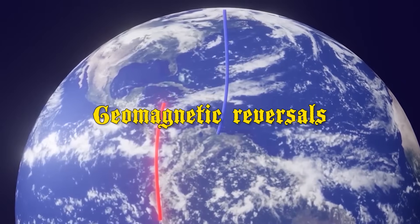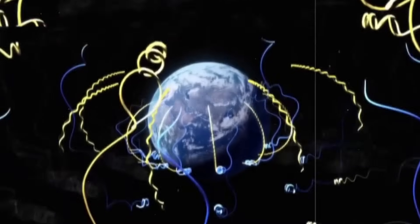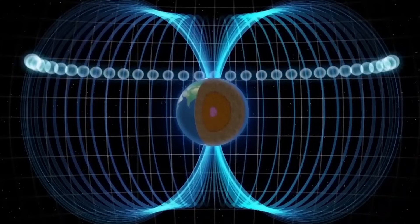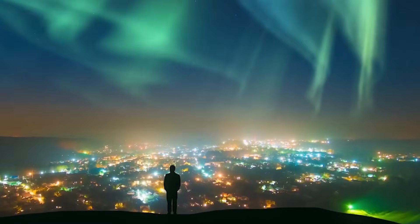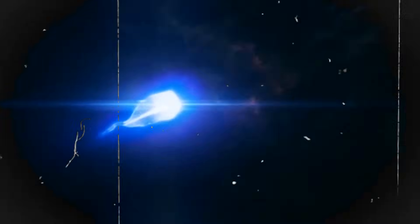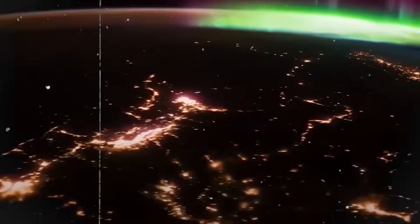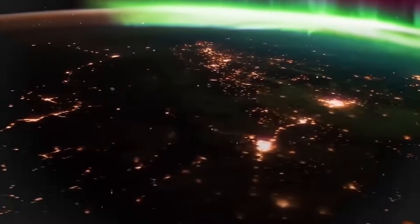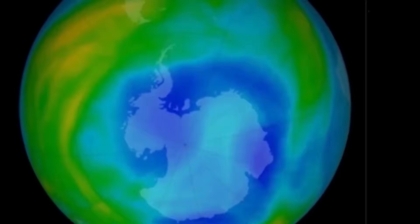Geomagnetic reversals are a natural and historical phenomenon where Earth's magnetic poles switch places. The magnetic field is dynamic and changes, and even reverses entirely. These reversals have occurred throughout Earth's history. This process is slow and unfolds over thousands of years.